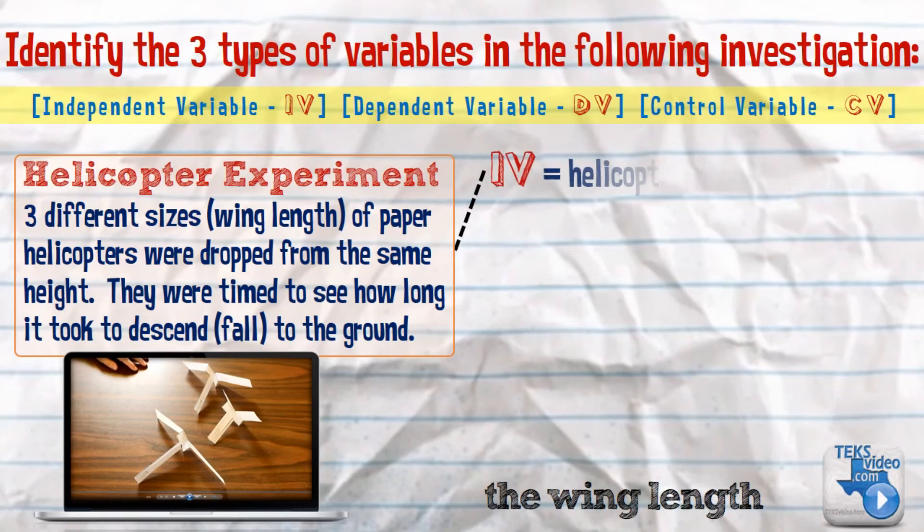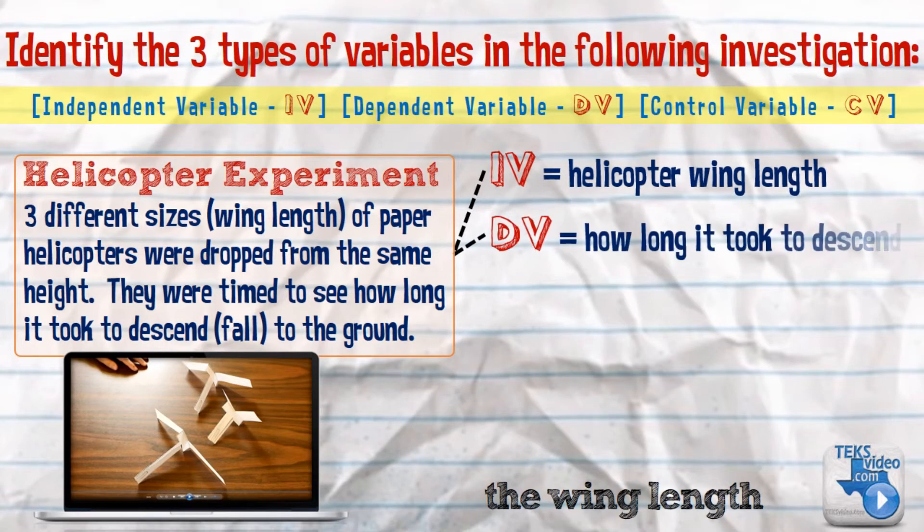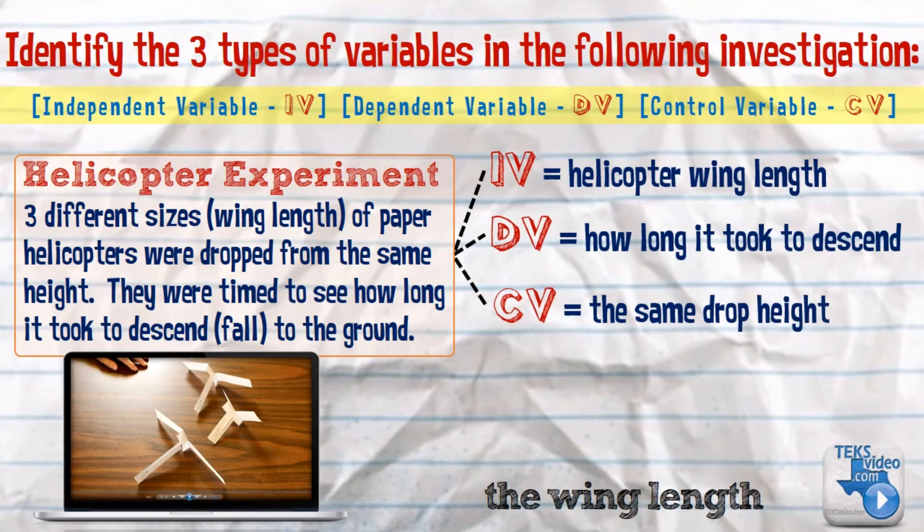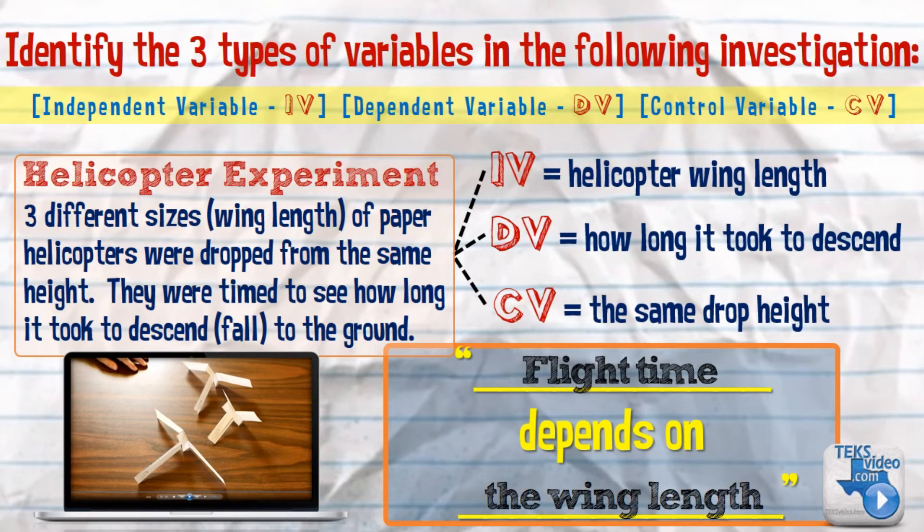The independent variable is the helicopter wing length. Dependent is how long it took to descend. Control is the same drop height. So, if we fill in our formula, it will say flight time depends on the wing length.